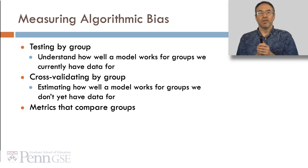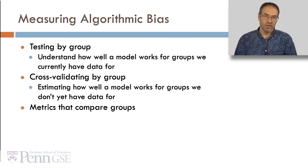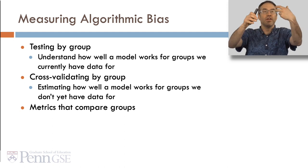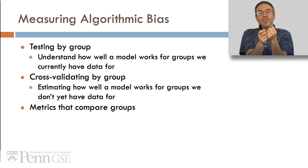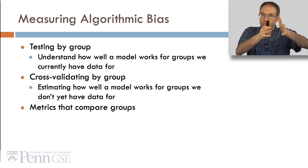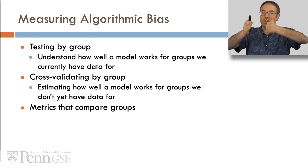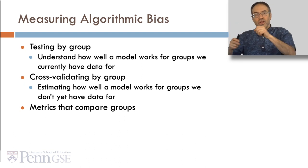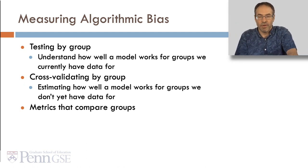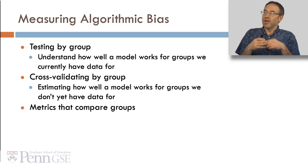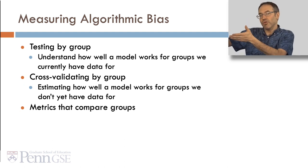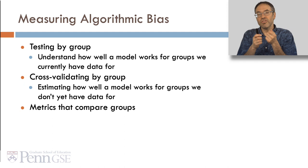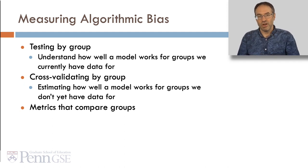So how do we measure algorithmic bias? There are three broad approaches. The first is to test by group: we build the model, validate it initially with everybody, and then split out the groups and ask how well the model works for each group we currently have data on. The second approach is to cross-validate by group, where we build the model on some groups and then apply and test it on other groups — a good approach for estimating how well a model works for groups we don't yet have data for.